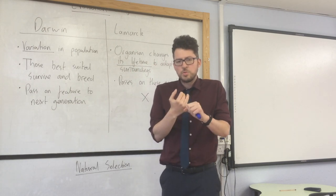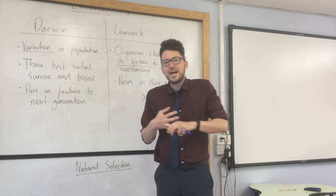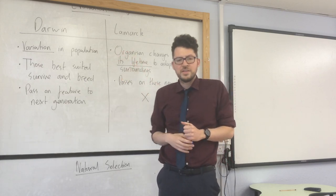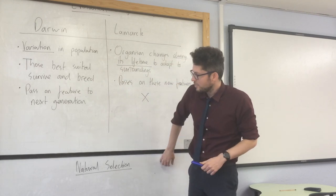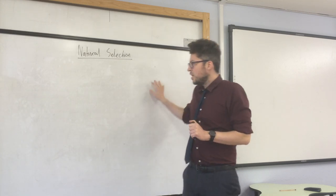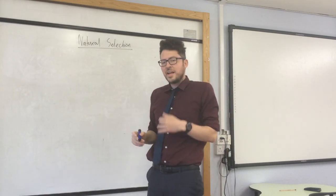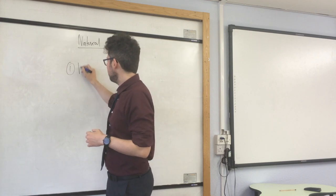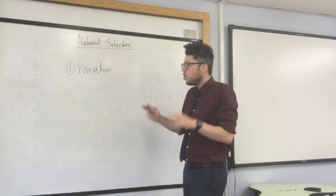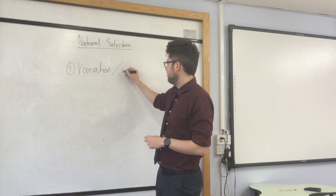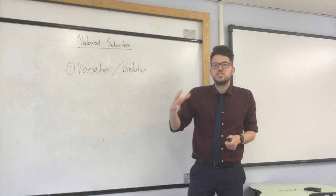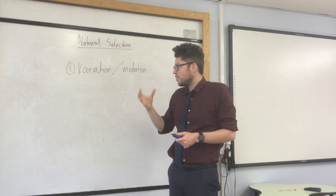The ones that were best suited would be able to survive and breed and then pass on these features to the next generation. We now know after collecting a lot of evidence that Darwin was correct. This is the theory of evolution by natural selection. The first step is there is variation in a population, or there could be a mutation. A mutation is a change in genes and it could lead to a new feature.